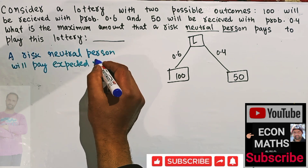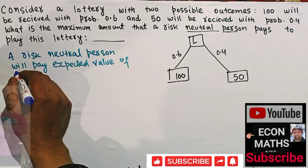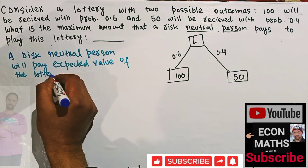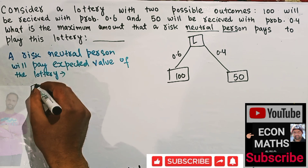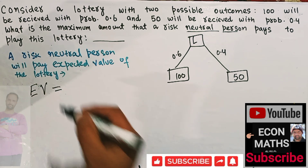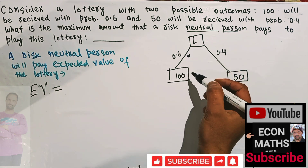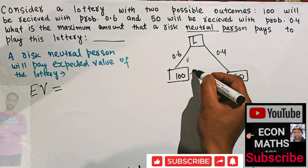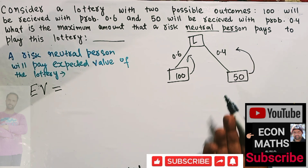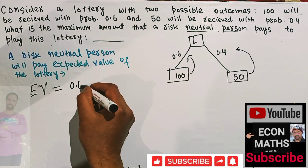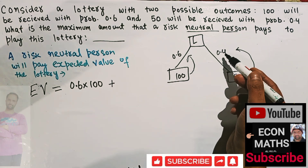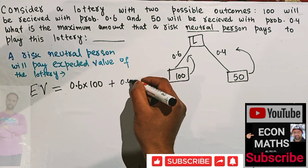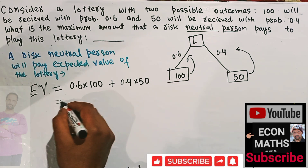A risk-neutral person will be willing to pay the expected value of the lottery. The expected value of the lottery is simply when we multiply each outcome with its corresponding probability and sum them up. That means 0.6 into 100, plus 0.4 into 50 — when we multiply each outcome with its associated probability and sum them out.